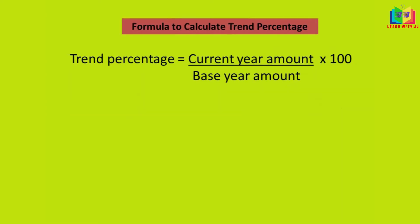Now we will see the formula to calculate trend percentages. Trend percentage equals current year amount divided by base year amount, into 100. This is the formula we are going to use in this trend percentage calculation.